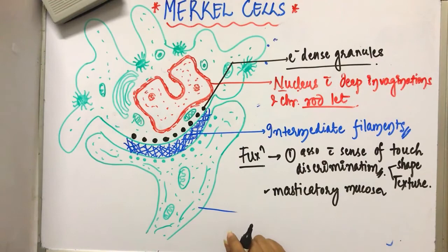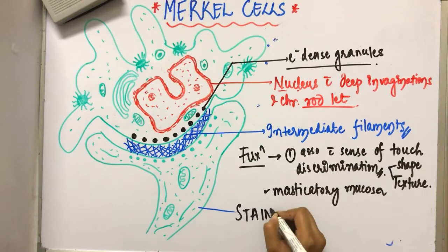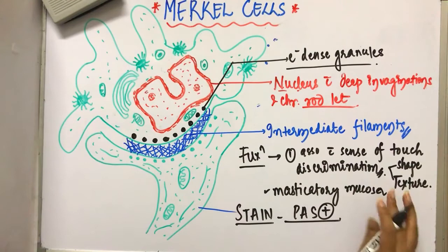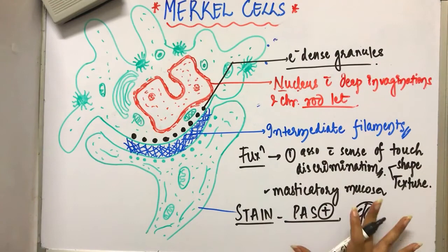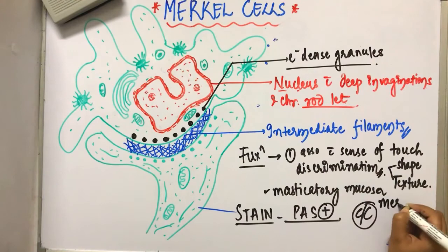Next is the stain. It takes the PAS positive stain. Next comes the clinical consideration. It can turn into a malignant form and can cause a skin tumor which is known as Merkle cell carcinoma.